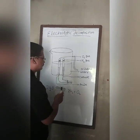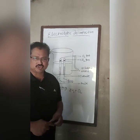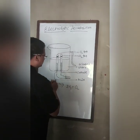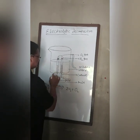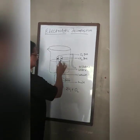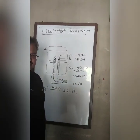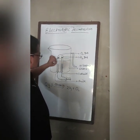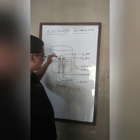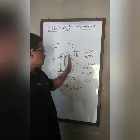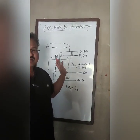As the current passes through, bubbles start evolving and gas is collected in the respective test tubes. The positive electrode is called the anode and the negative one is called the cathode. Do you think the gas collected in both test tubes is of equal volume? The answer is no — the volume of gas collected at the cathode is exactly twice the volume of gas collected at the anode.